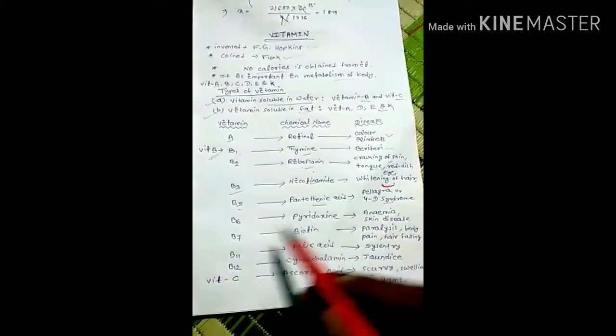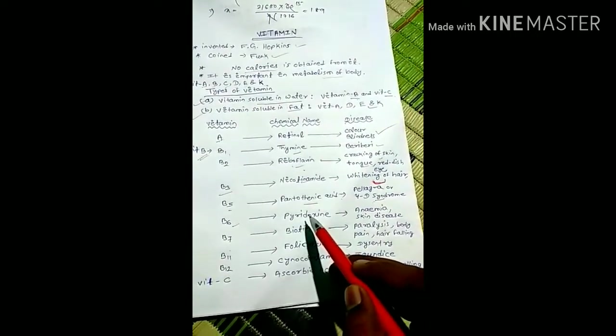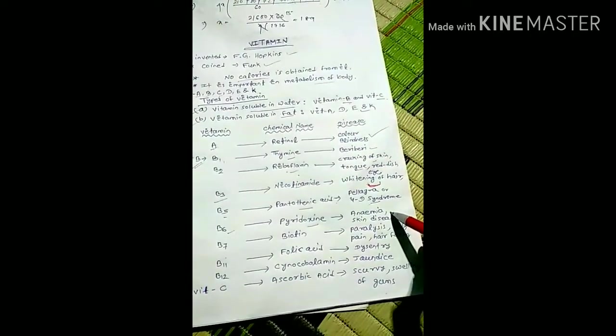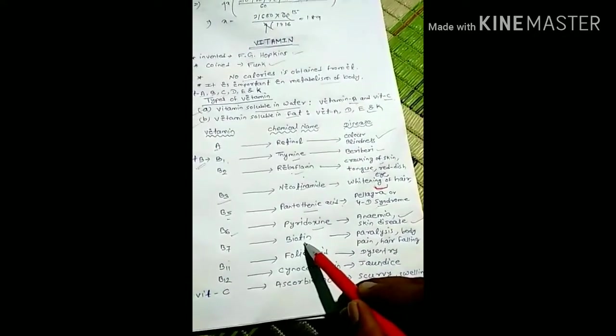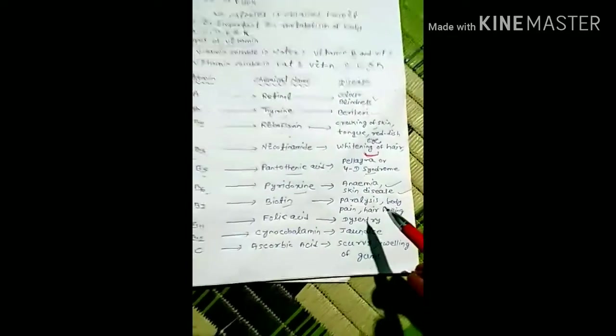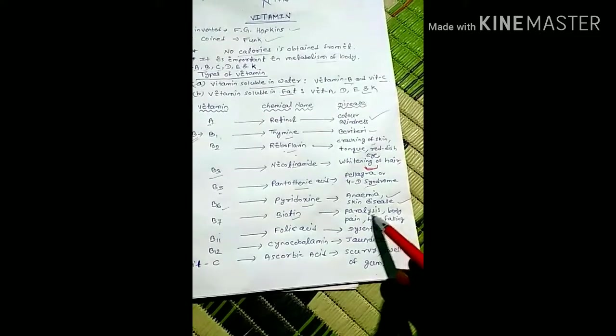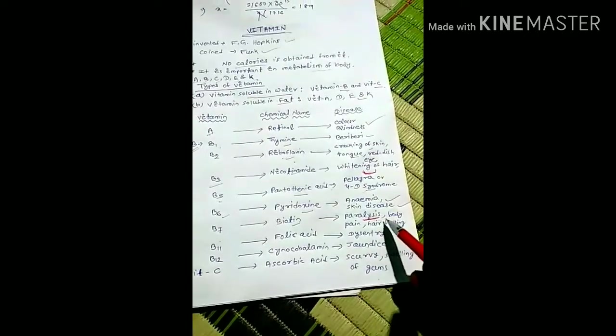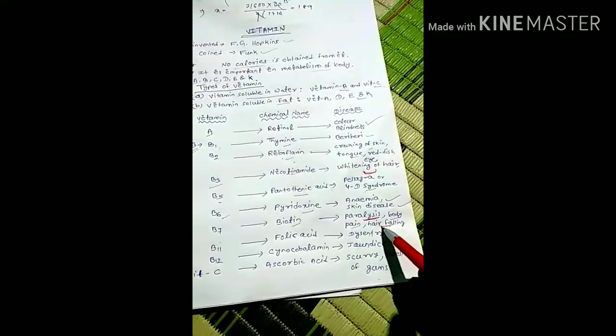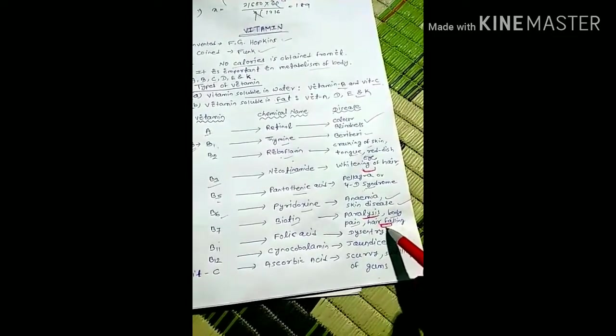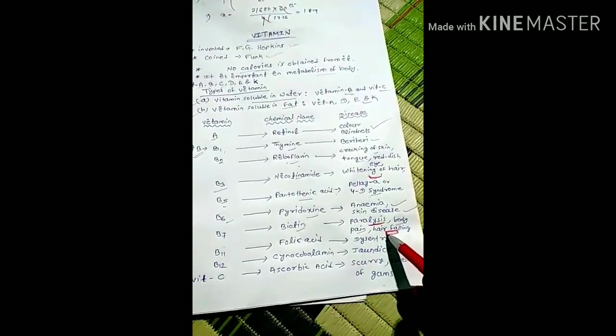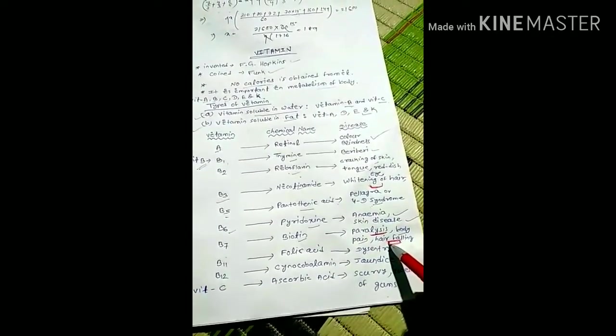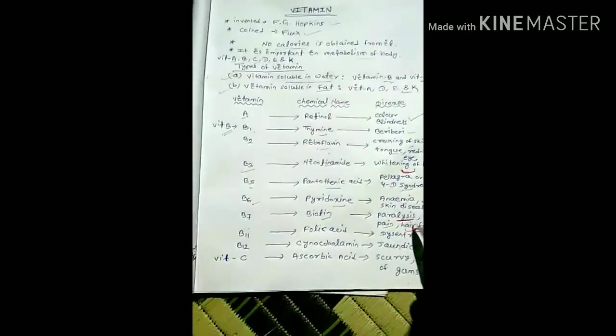Vitamin B6's chemical name is pyrodoxin, and its deficiency causes anemia and skin disease. Vitamin B7's chemical name is biotin, and deficiency of vitamin B7 causes paralysis, body pain, and hair falling - diseases that occur in many young people's lives.